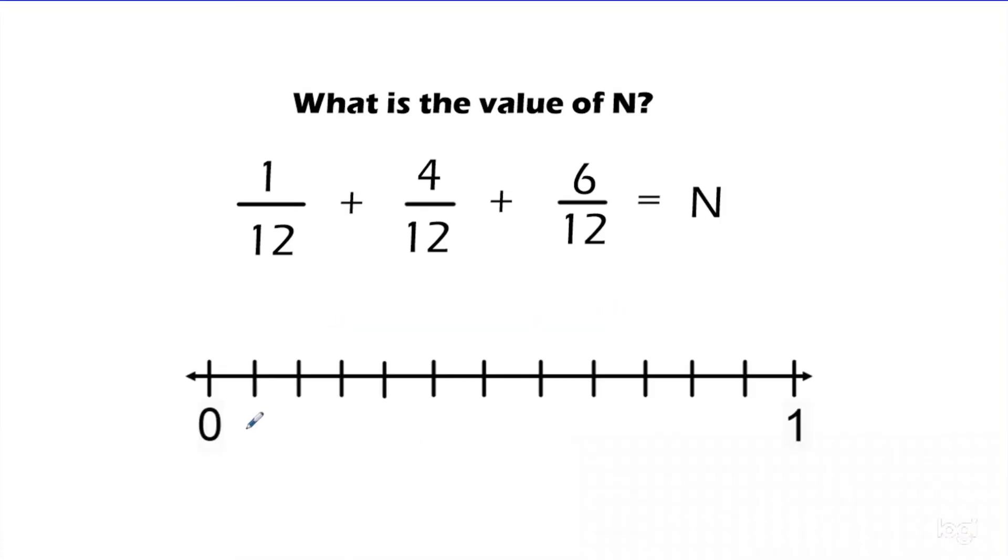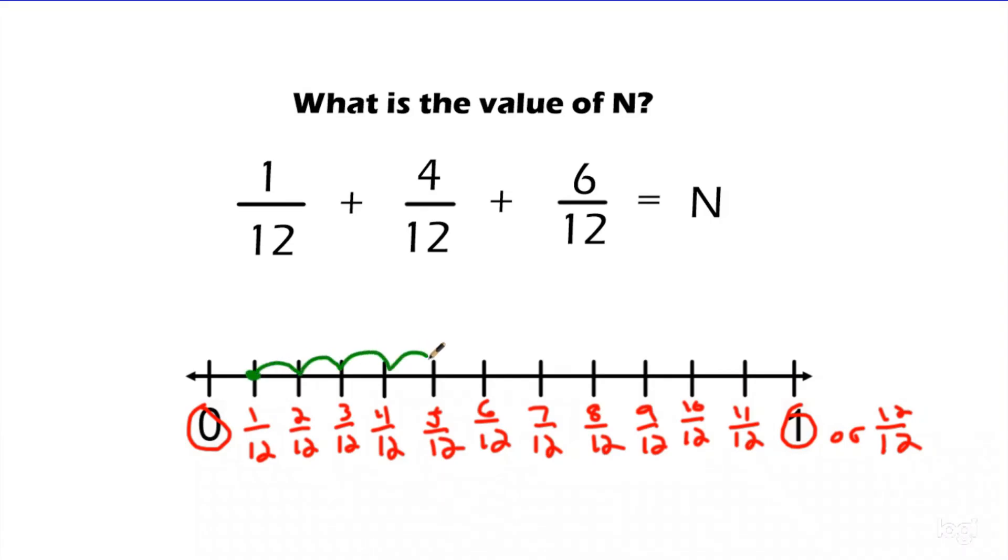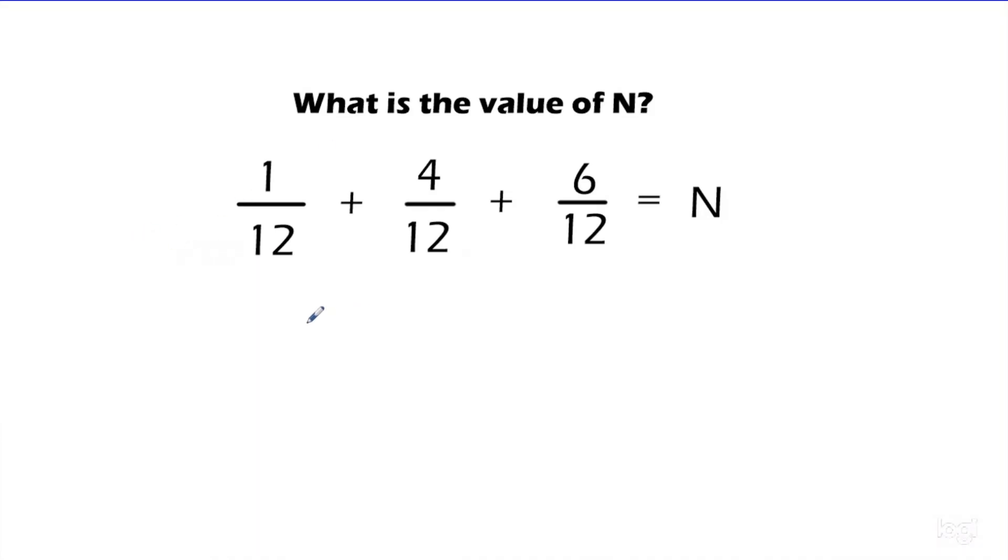Let's check out the number line now. So here I'm going to circle zero and one. And I'm going to quickly go ahead and label this. I've already split it into 12 equal pieces, but I'm going to label it for us. And I'm going to start at 1 twelfth, and I'm going to add 4 twelfths to that. So 1, 2, 3, 4, that brings me to 5 twelfths. I'm going to add another 6 twelfths to that. 1, 2, 3, 4, 5, 6. I passed it a little bit. And that brings us again to a sum of 11 twelfths. So we've seen the area model, we've seen the number line. Again, it gives us the same answer, just different ways to do it.